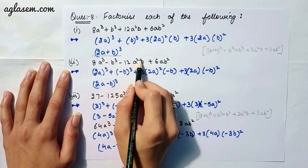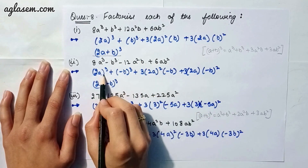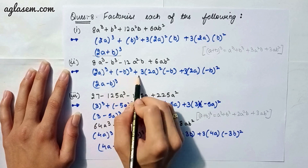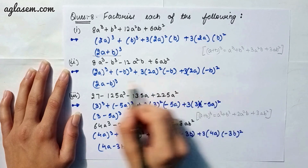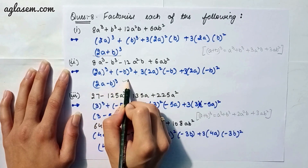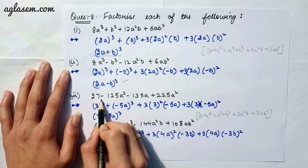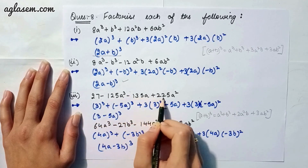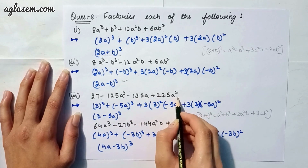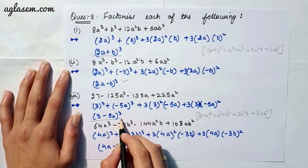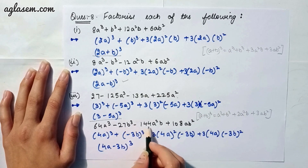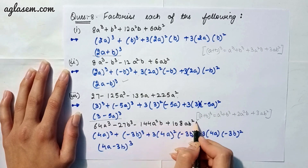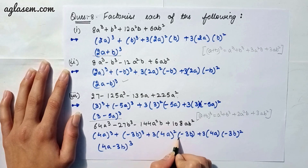Moving to our second part: 8a³ − b³ − 12a²b + 6ab². By applying the same identity, the answer is (2a − b)³. Part 3 says 27 − 125a³ − 135a + 225a². Applying the identity, the answer is (3 − 5a)³. Part 4 says 64a³ − 27b³ − 144a²b + 108ab². Applying the same identity, the answer is (4a − 3b)³.